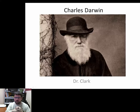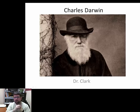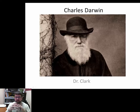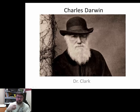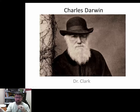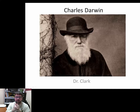Charles Darwin was born into what you could say a wealthy family — his family was well-to-do. His dad was a physician, his grandfather was a physician, and ultimately Charles Darwin was meant to be a physician. According to Charles Darwin's father, individuals who were well-to-do during this time period had two job options: you could be a physician or you could be a clergyman.